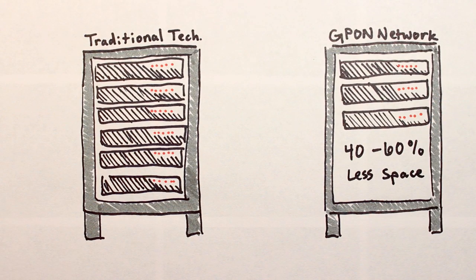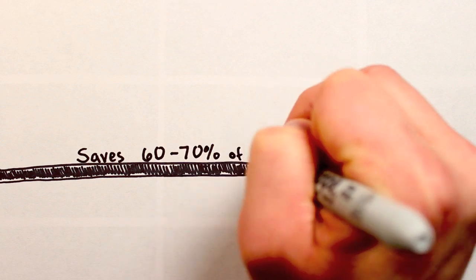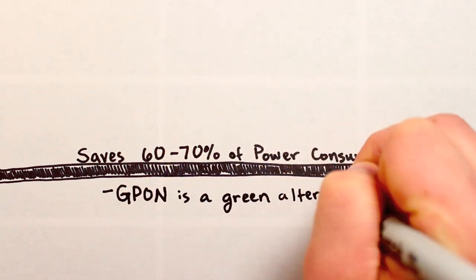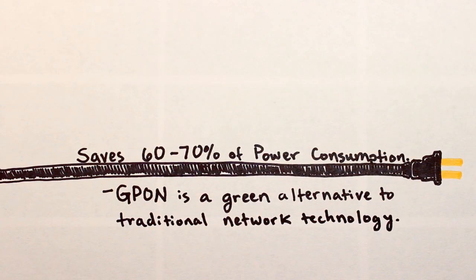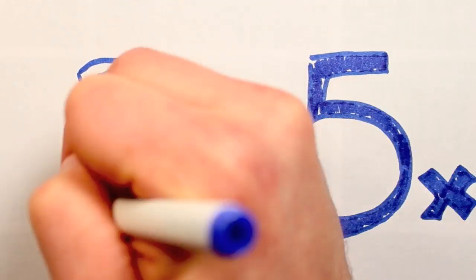A GPON or optical LAN network can save you 60% to 70% of your data network power or energy consumption, making GPON a green alternative to traditional data networks. In addition to the direct cost savings, a network built with GPON technology lasts on average three to five times longer than a traditional data network.